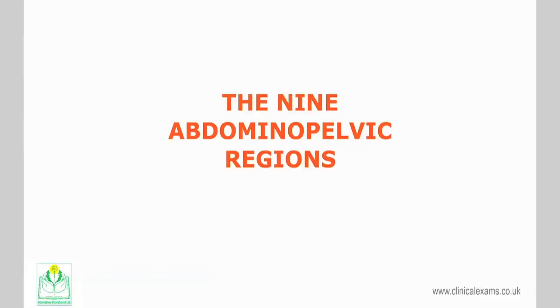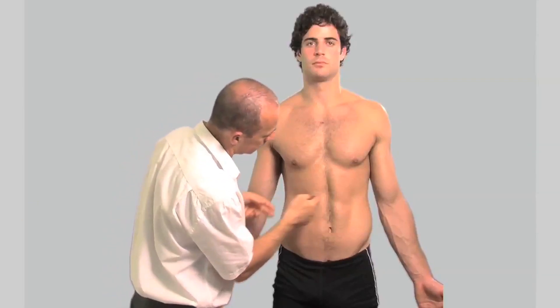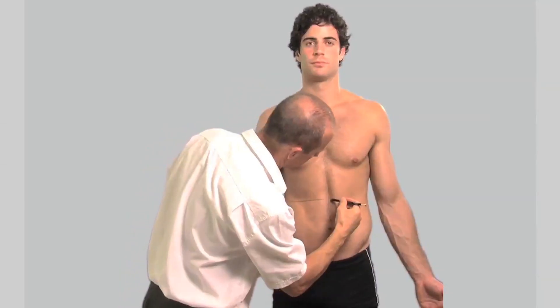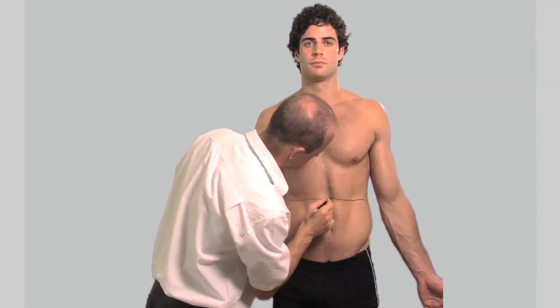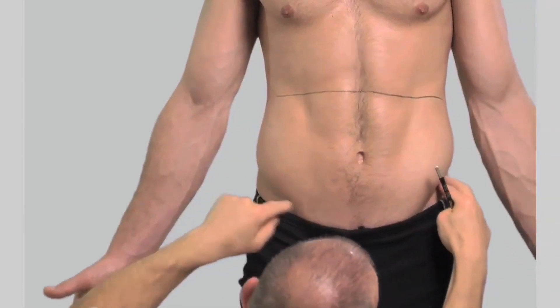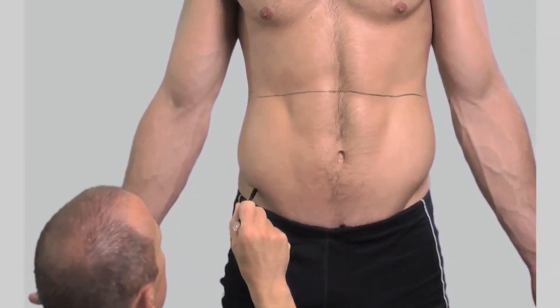The nine abdominopelvic regions. There are two horizontal planes and two vertical planes which divide the abdomen into nine regions or compartments. These regions are important for the definition of organ position and more specific location of symptoms. The superior horizontal plane is drawn at the subcostal plane, that is the level of the 10th costal cartilage. The inferior horizontal plane is drawn at the trans-tubercular level, that is a point on the iliac tubercles between the iliac crests and anterior superior iliac spine.